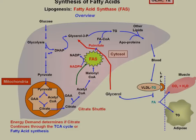Fatty acid synthesis during the well-fed state occurs primarily in the liver and in adipose tissue. Part of the fatty acid synthesis pathway happens in the muscles, but it doesn't go all the way, and we'll go into that here in a minute.